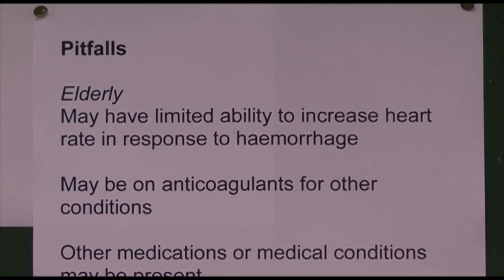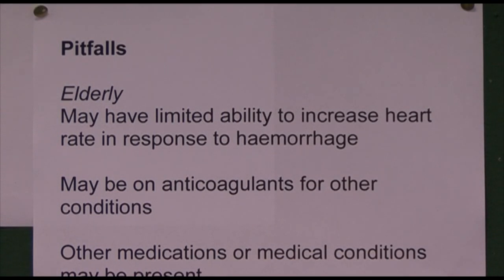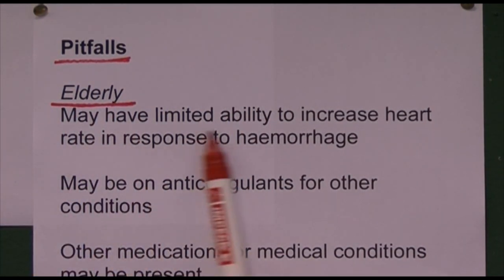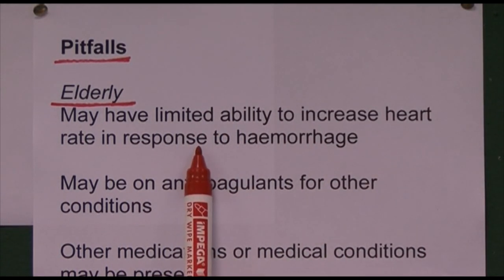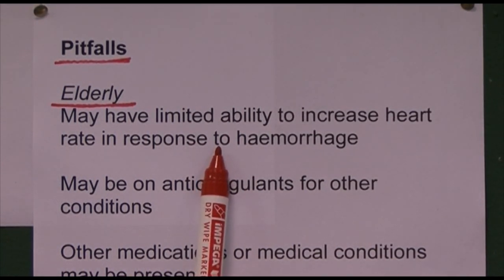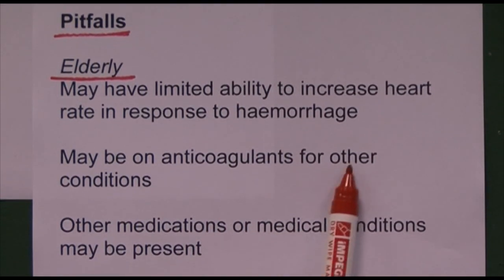To summarise: A for airway and cervical spine protection, B for breathing and ventilation, C for circulation and haemorrhage control, D for disability with neurological examination using AVPU and GCS along with spinal cord assessment, and E for exposure, environment, and everything else. A few potential pitfalls: the elderly may have a limited ability to increase heart rate in response to haemorrhage, meaning older patients may not show the expected tachycardic response.